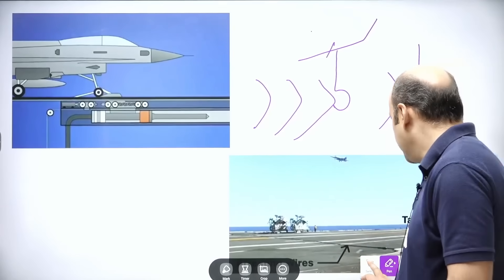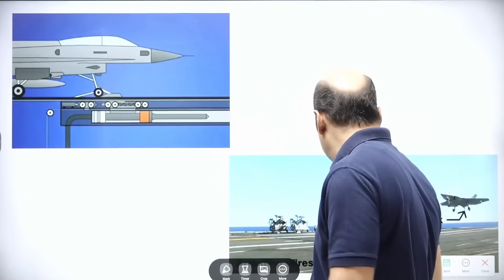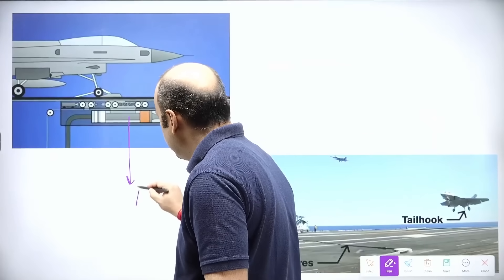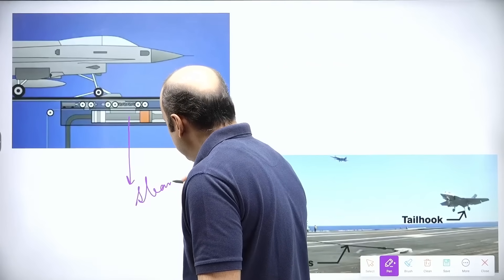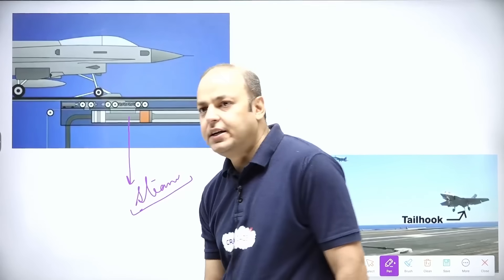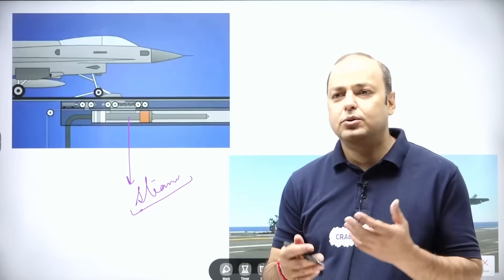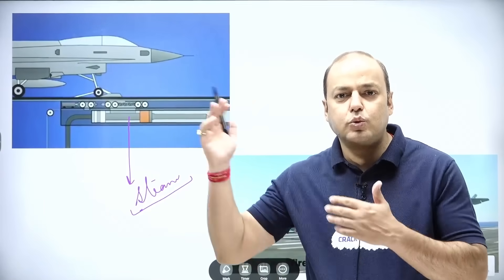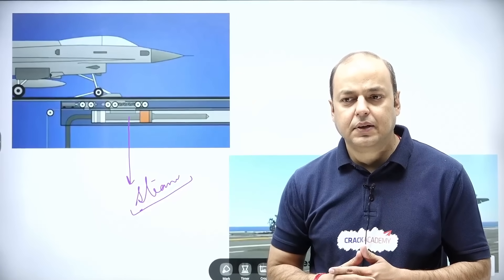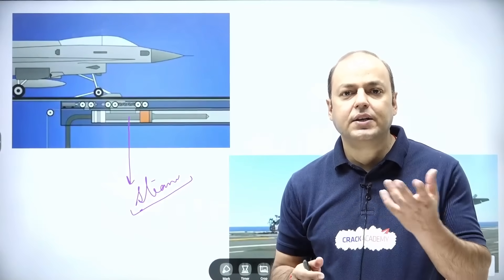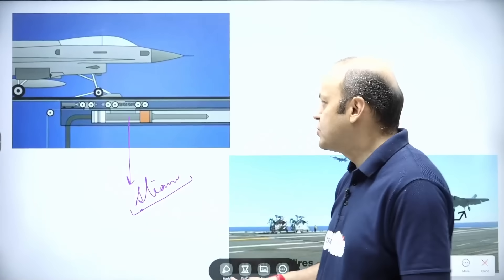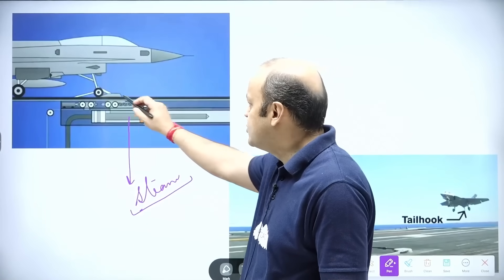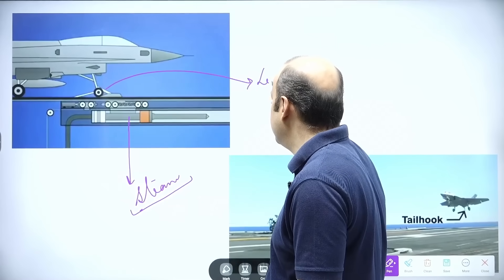Let us see a live example. The main challenge with this system is that it is based on steam. The steam is generated, and if you do not provide enough velocity for the tires to roll out and give the initial jerk, the life of the tires is usually reduced. So one disadvantage of this technology is reduced tire life.